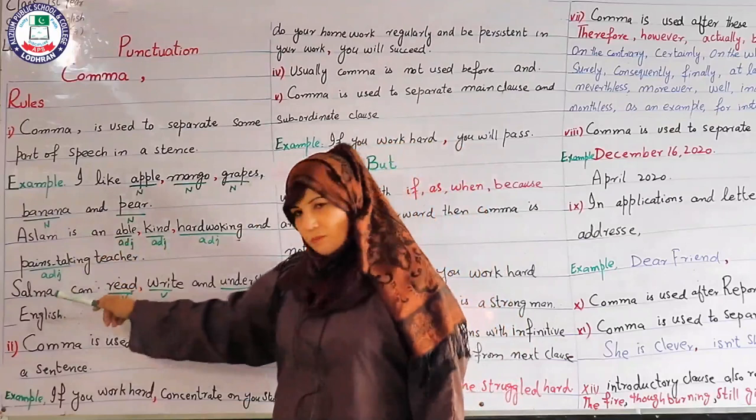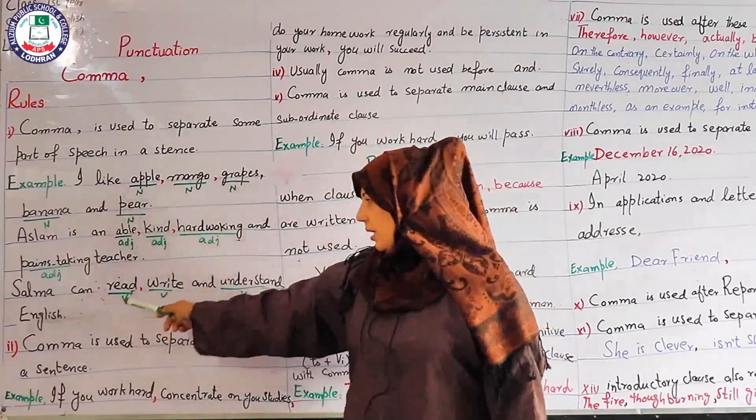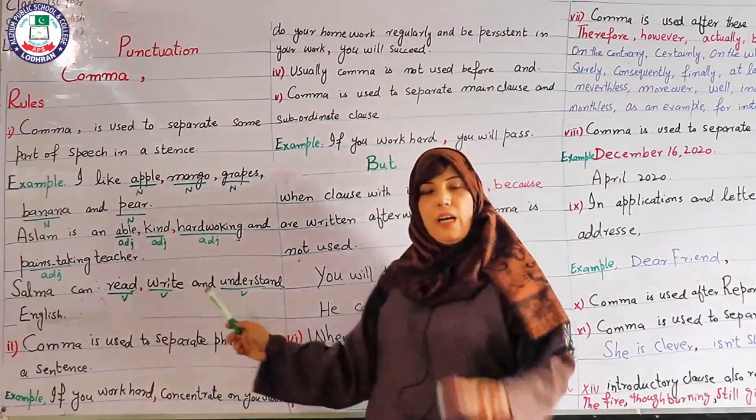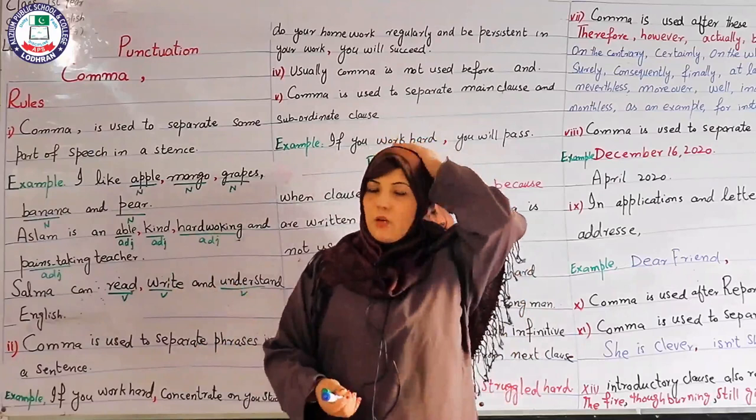Another example: 'Selma can read, write and understand English.' Read is a verb, write is a verb, and understand is a verb — all the same part of speech. We have used 'and' to separate the last two verbs, and commas to separate the earlier ones.